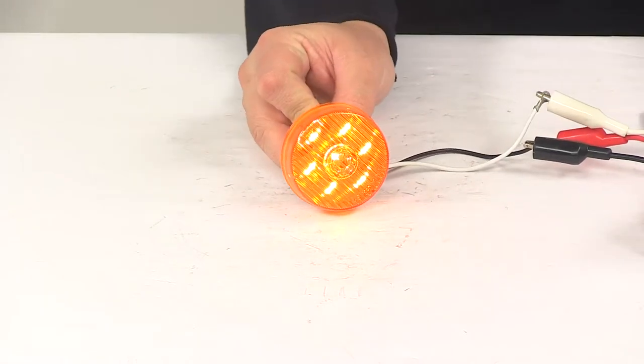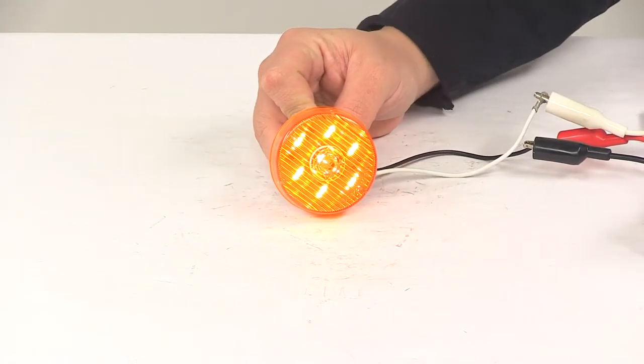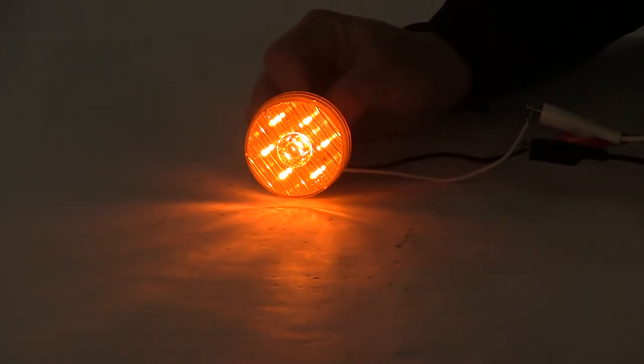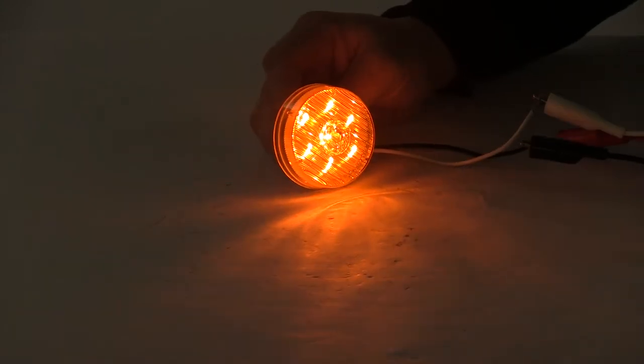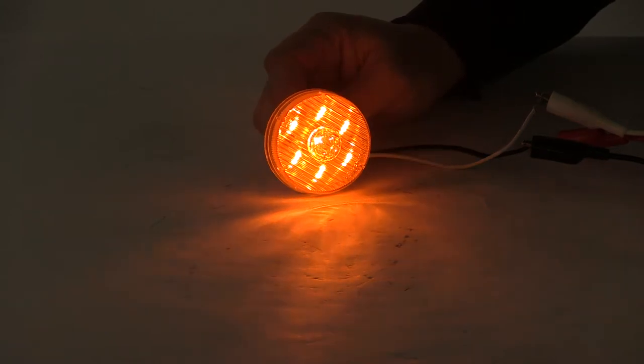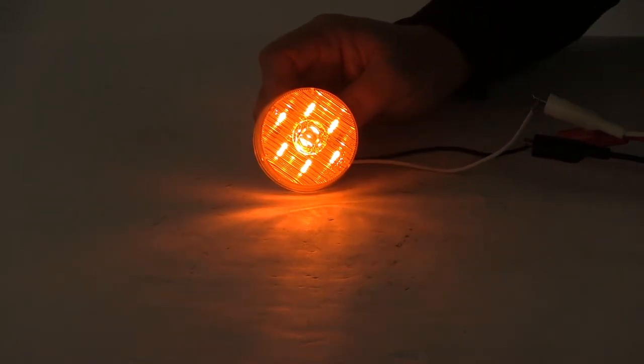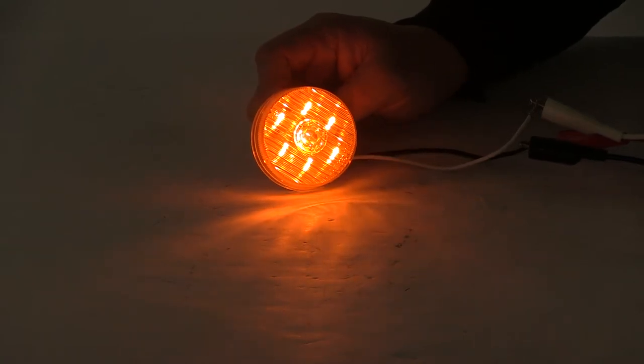So you can see here, it's a nice bright light. We'll turn off our overhead lights. Offers really nice consistent light output. The multi-diode design really helps optimize the overall performance of the light. Again, this is going to contain seven LEDs for a nice bright light that functions as a clearance and side marker light.